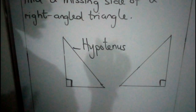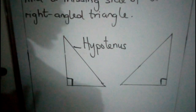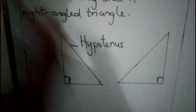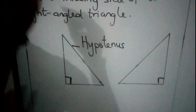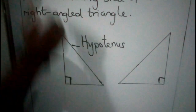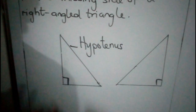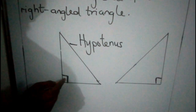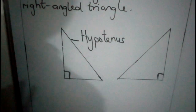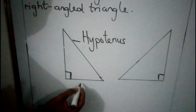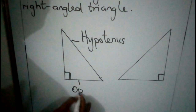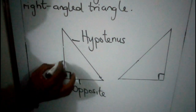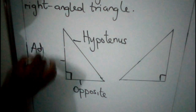I have two ways to help you identify the longest side — the hypotenuse. The first one is that it is the slanting side. The second is that it is the side that is opposite the right angle, the 90 degrees. The other two sides: one of them is called opposite and the last one is called adjacent.